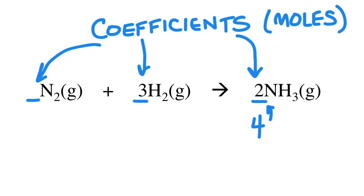If you wanted four moles of ammonia, you would just double the recipe, just like in the cake example. So you would need two moles of nitrogen gas and six moles of hydrogen gas.